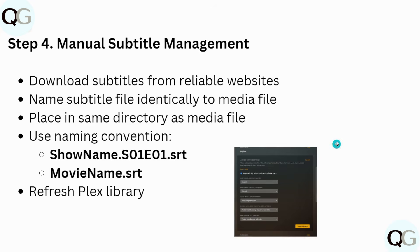You can also do manual subtitle management. Download subtitles from a reliable website, then name the subtitle file identically to the media file. Place it in the same directory as the media file and use the naming convention: ShowName.S01E01.srt or MovieName.srt. Then refresh your Plex library.